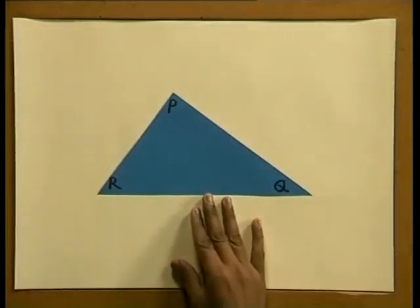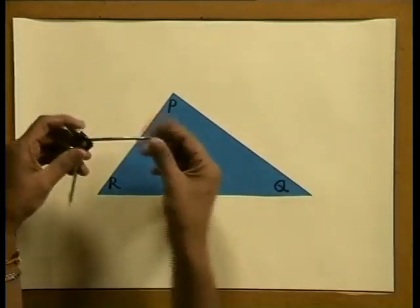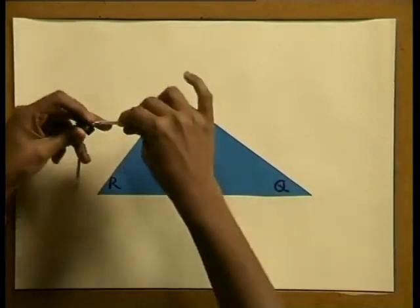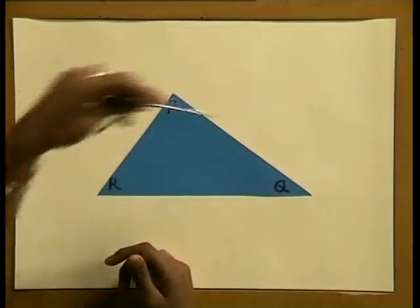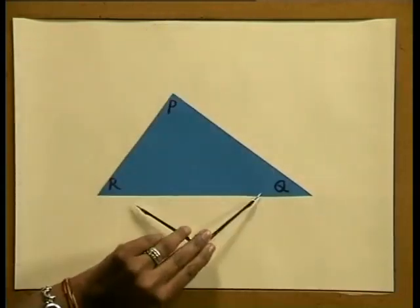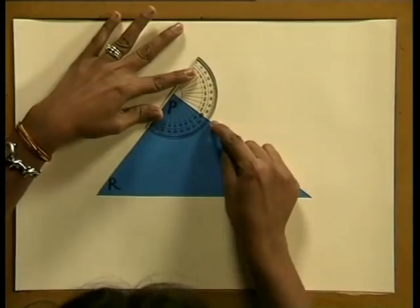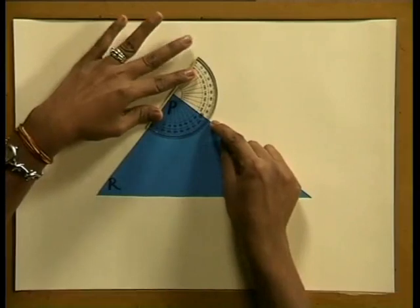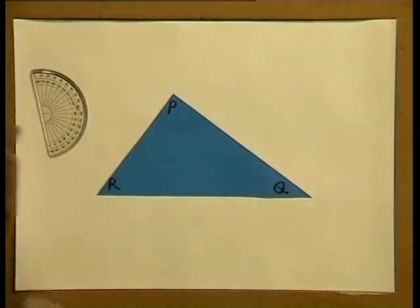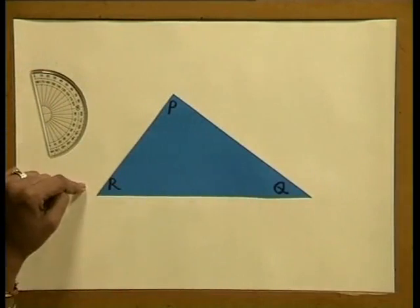Do you think we could get a right-angled scalene triangle? Look at this example. If we measure the sides using a divider, we see the sides are obviously not equal to each other. Now measuring the angles using a protractor, we see it is indeed 90 degrees. We can now say that triangle PQR is a right-angled scalene triangle.